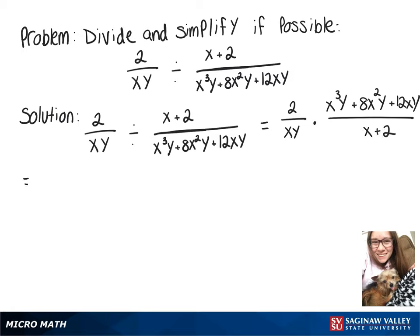Then multiplying across the top and across the bottom gives us 2 times x cubed y plus 8x squared y plus 12xy over xy times x plus 2.